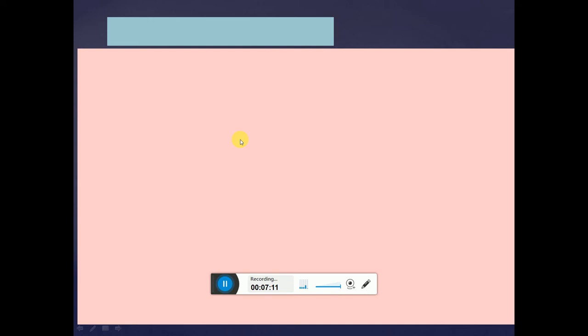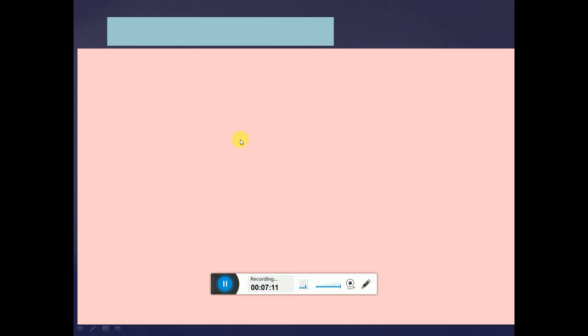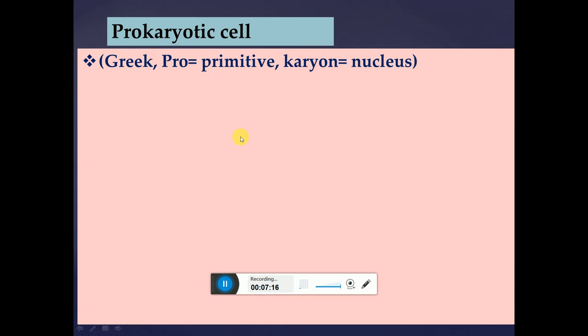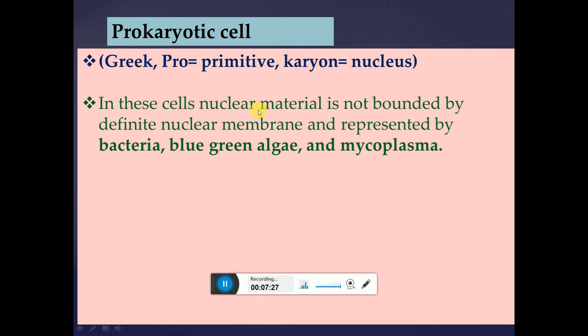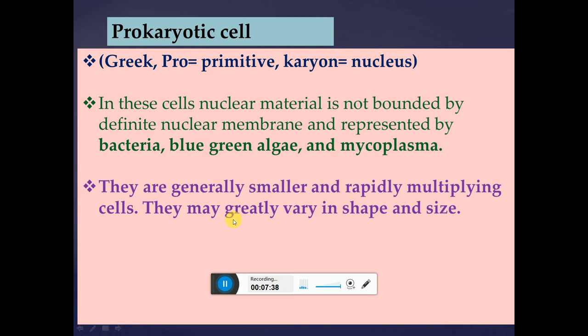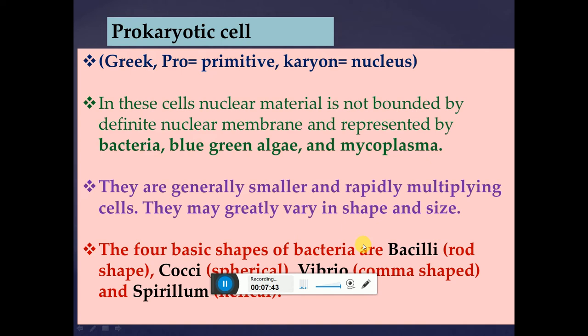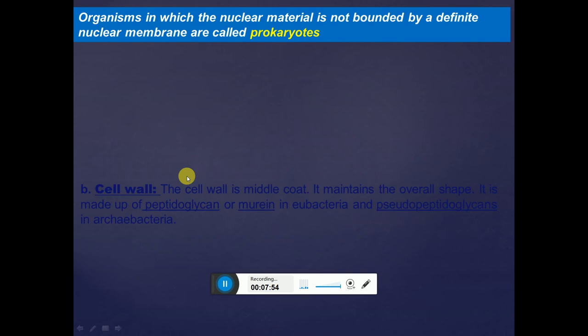The prokaryotic cell — 'pro' means primitive, 'karyon' means nucleus in Greek — refers to cells without a true nucleus. In these cells, nuclear material is not bounded by a definite nuclear membrane. They are represented by bacteria, blue-green algae, and mycoplasma. They are generally smaller and rapidly multiplying. The four basic shapes of bacteria are: rod-shaped (bacilli), spherical (cocci), comma-shaped (vibrio), and helical (spirula).